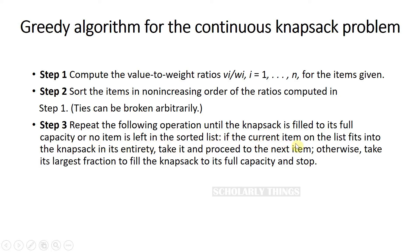If the current item on the list fits into the knapsack in its entirety, take it and proceed to the next item. Otherwise, we don't go to the next item — we take its largest fraction to fill the knapsack to its full capacity and stop. In this approximation algorithm, we are allowed to take the fraction of items.